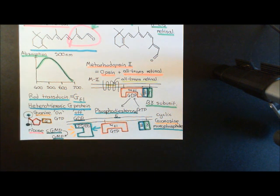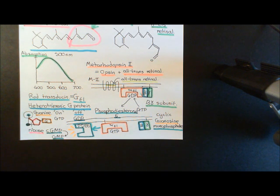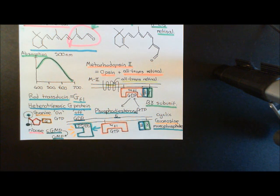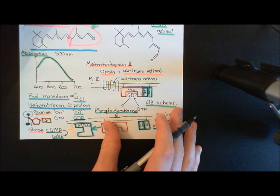So phosphodiesterase-6 is going to break down all of the cyclic guanosine monophosphate that's usually present inside the photoreceptor in the dark to guanosine monophosphate, and therefore whatever that cyclic guanosine monophosphate is doing, it's going to stop doing it. So the next question becomes: what was the cyclic guanosine monophosphate doing?